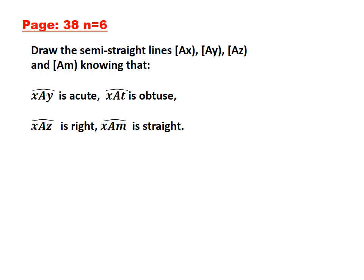Let's start with the first angle, XAY. XAY is made up of two semi-lines, AX and AY. So let's start with the first semi-line, AX. AX is the first semi-line. Now what about AY?